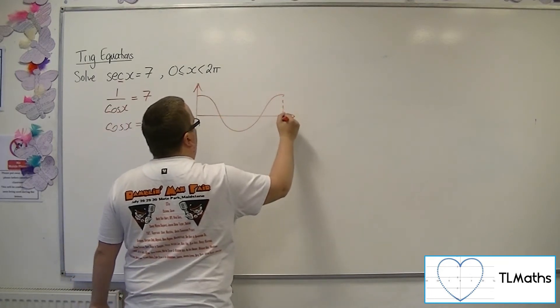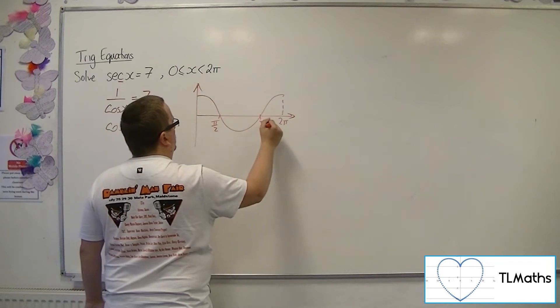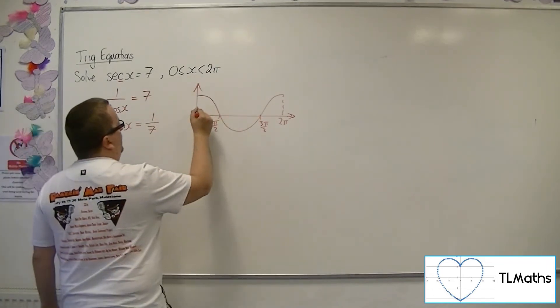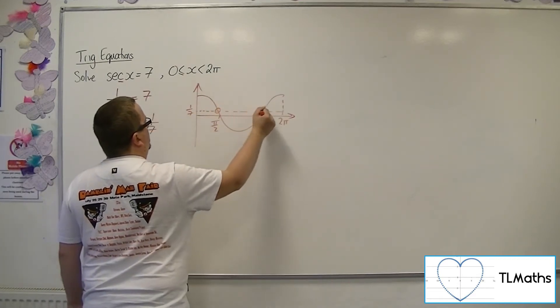If we quickly sketch cosine, then cos(x) equals 1/7. There's 1/7, so we'd be expecting two solutions.